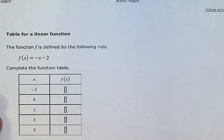Table for a linear function. Function f is defined by the following rule: f of x equals minus x minus 2. Complete the function table.